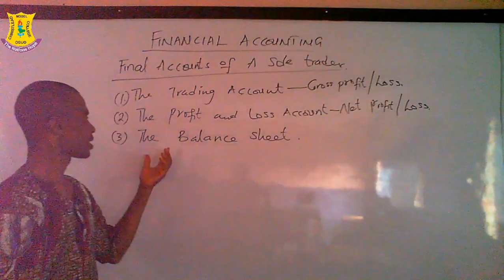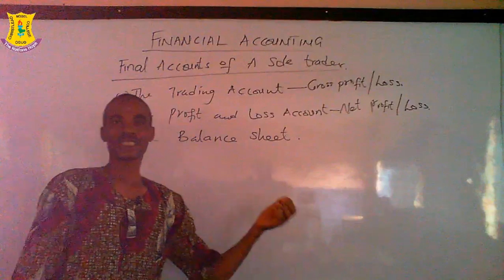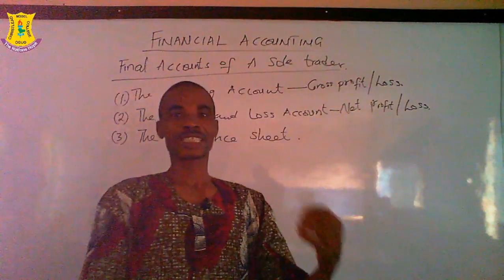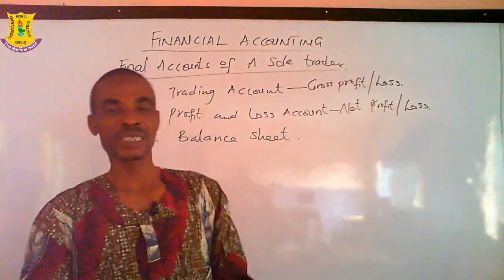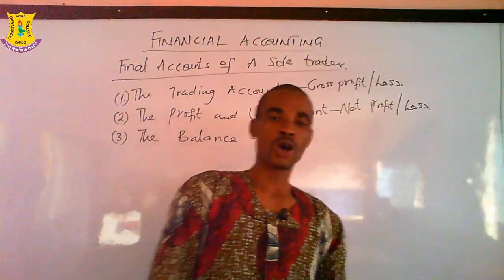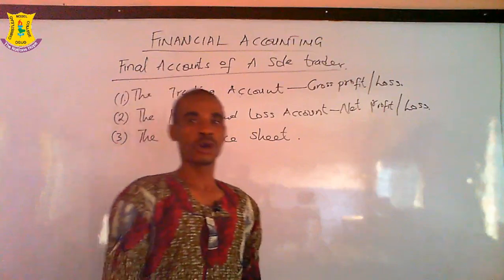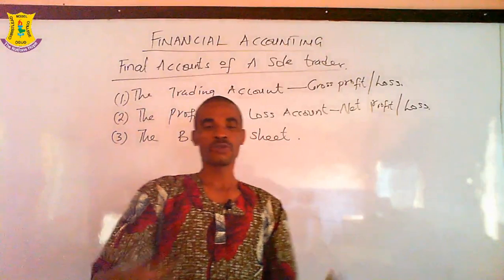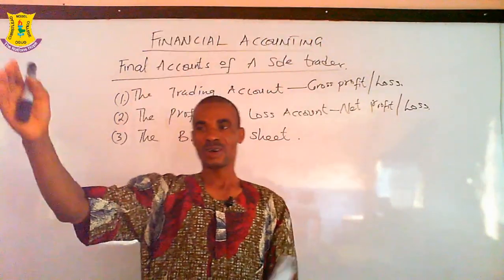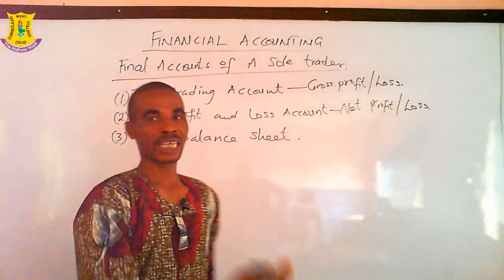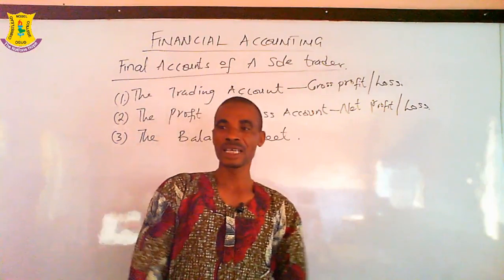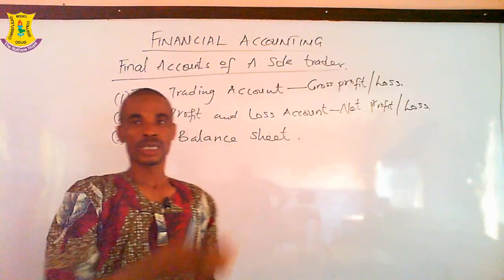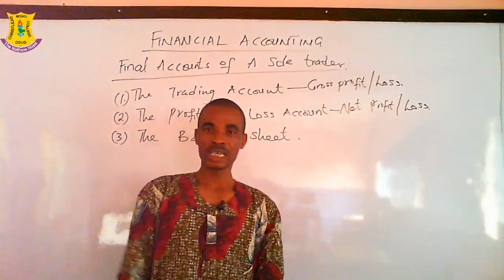We prepare the profit and loss account to determine the net profit or loss. These two accounts follow the principle of double entry, so we refer to both of them as revenue accounts. The balance sheet, however, is not an account — it is a statement showing the financial position of a business within a given period, usually one year. Assets are on one side, and liabilities and capital on the other, so assets equal capital plus liabilities.